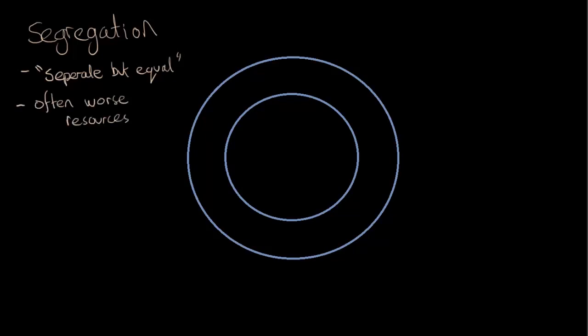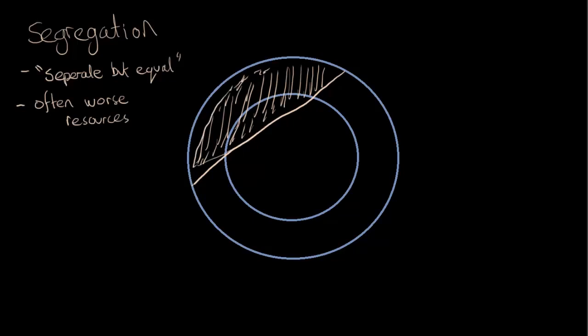So if we consider our society again, perhaps segregation would look like this. One set of individuals would perhaps occupy only a part of the mainstream and the fringes of society and they'd be segregated out.